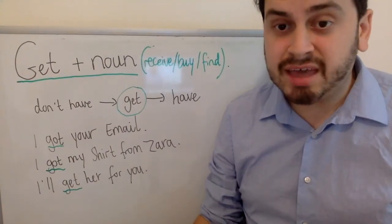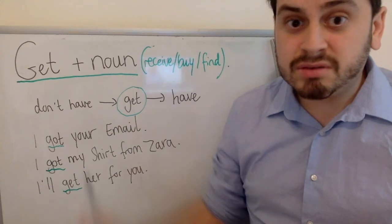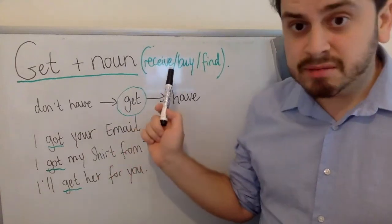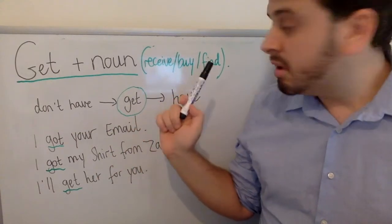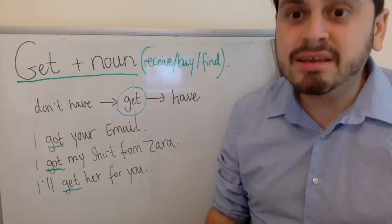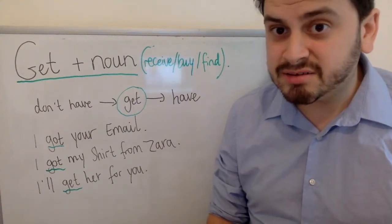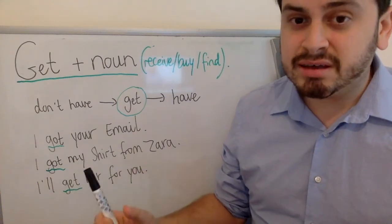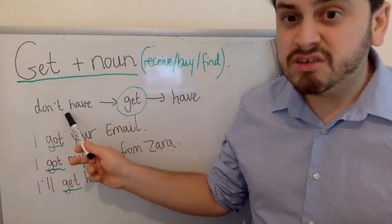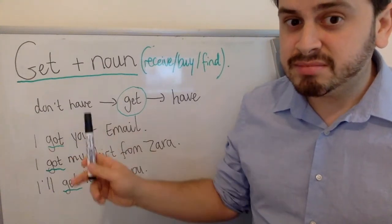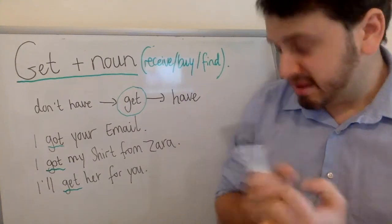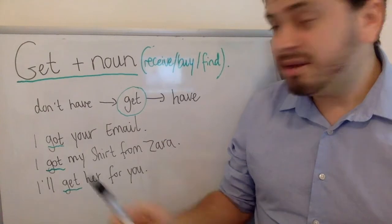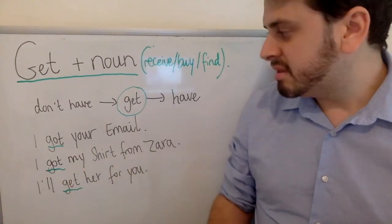Let's look at the first usage of 'get' — this is when we use 'get' with a noun. When we use 'get' with a noun it can mean receive, buy, or find, depending on the context of the sentence. One way to illustrate this: initially you don't have it, then you get it, and now you have it.